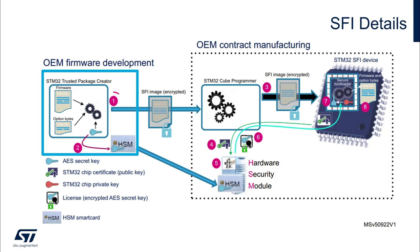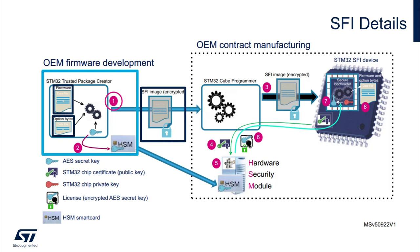In Step 1, the OEM creates an AES secret key — it is the OEM's responsibility to maintain the key's secrecy — and uses STM32 Trusted Package Creator to create the encrypted SFI image that includes the original firmware and the Option Bytes configuration of the device after the SFI process.